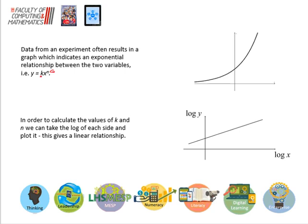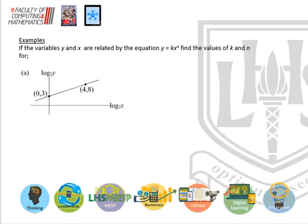It's very much just a look-at-and-do process — a kind of bonus level question. So here we have a relationship that has been turned into a straight line, and we are looking to find the relationship between the data: y equals kx to the power n. We have two points and the y-intercept, so we can get the equation of the straight line relatively straightforwardly.